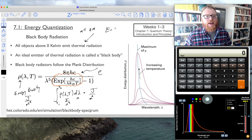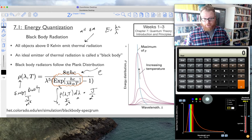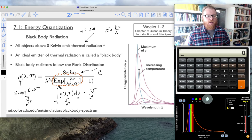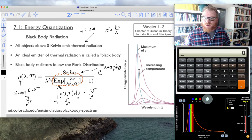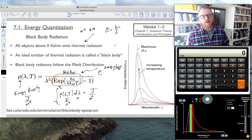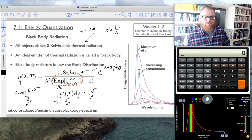You notice here that it is e raised to the hc divided by λ. Well, remember, energy equals hc divided by λ. That is energy. So this is e raised to the energy divided by kBT. So it is a Boltzmann distribution, but now this energy is hc divided by λ. It's the energy of a photon.